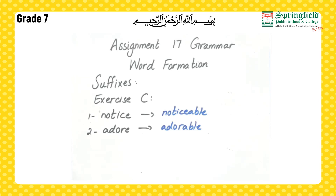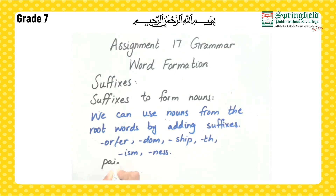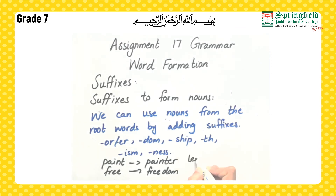Now we will look at suffixes used to form nouns. We can make nouns from root words by adding suffixes such as -er/-or, -dom, -ship, -th, -ism, and -ness. For example, paint becomes painter, and create becomes creator using -er/-or. Free becomes freedom using -dom — it shows a kind of domain. Leader becomes leadership using -ship. Grow uses -th to show condition. These suffixes help us form nouns.